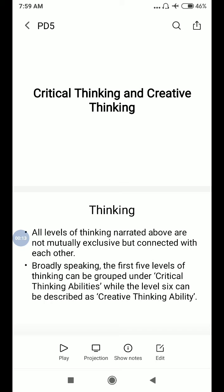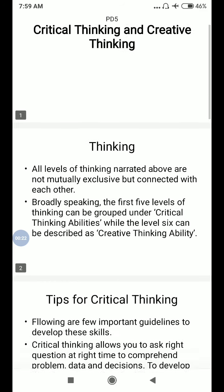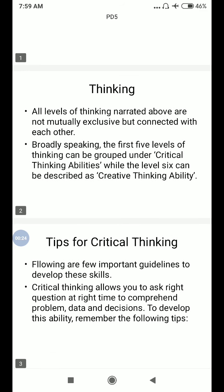All the levels of thinking are not mutually exclusive but connected with each other. Broadly speaking, the first 5 levels of thinking can be grouped under critical thinking ability, while level 6 can be described as a creative thinking ability.